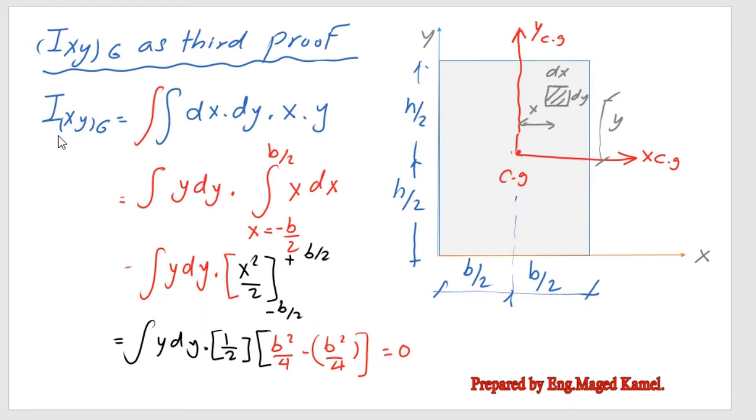We are going to write directly as I, the product moment of inertia at the CG, but this time we are going to make double integration because we have DX DY. So we have the area DX by DY multiplied by the X horizontal distance to Y_CG multiplied by Y.